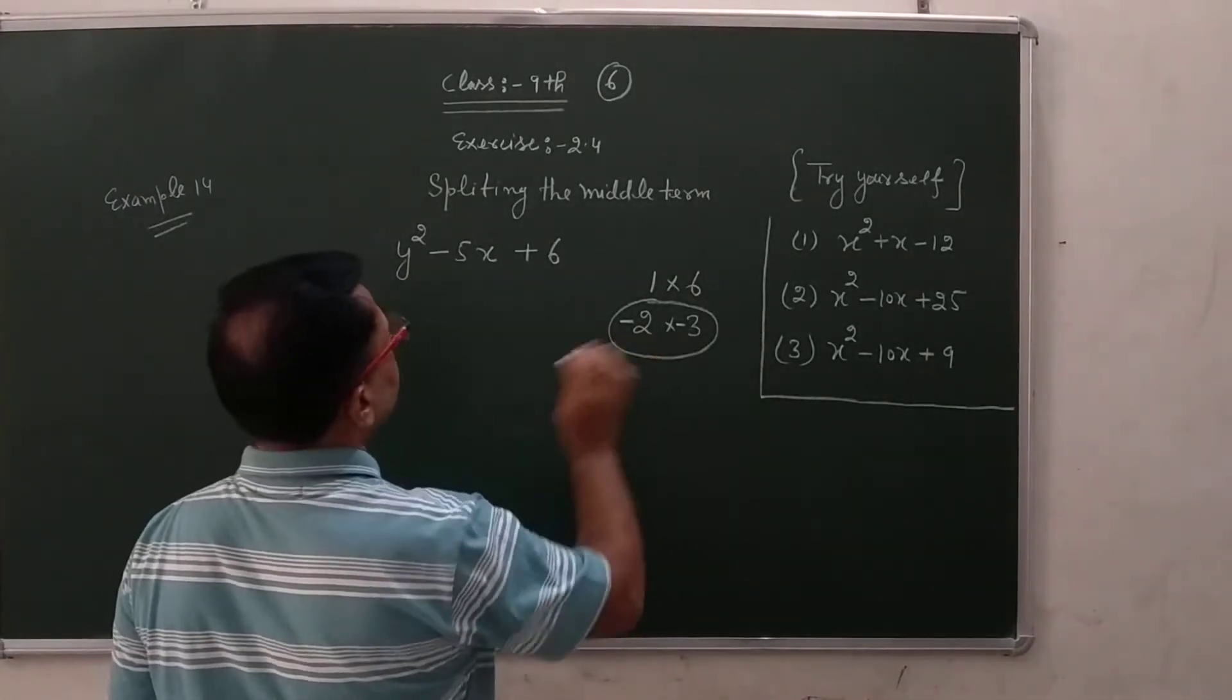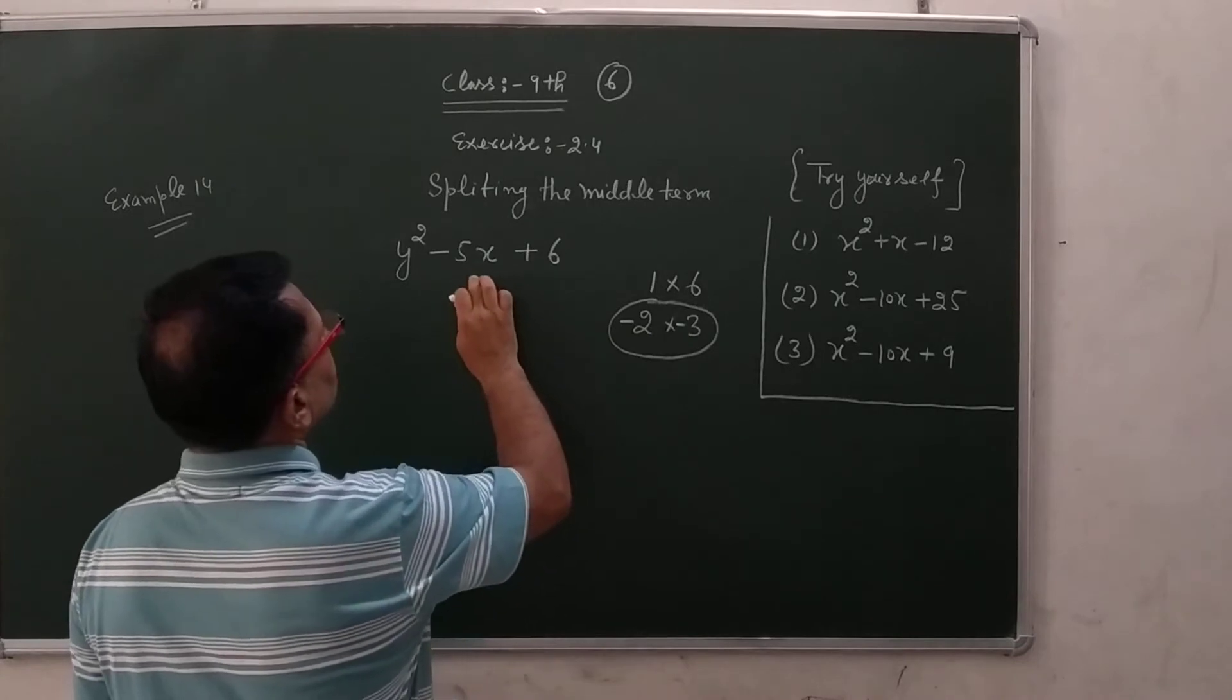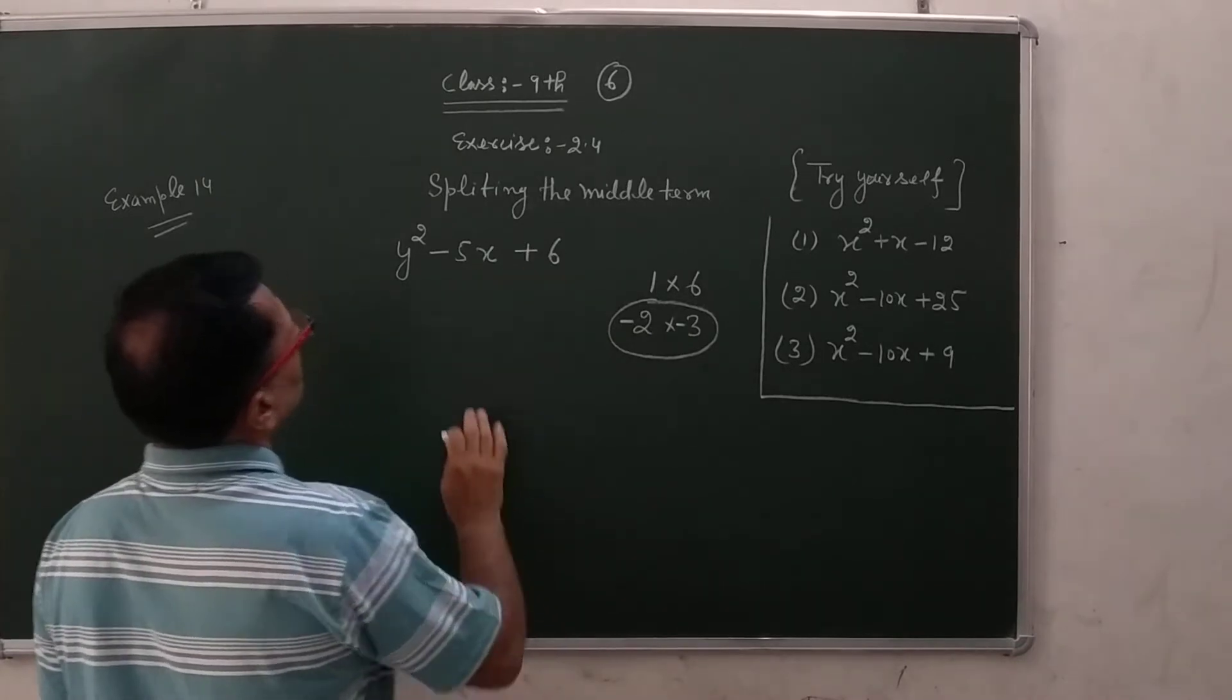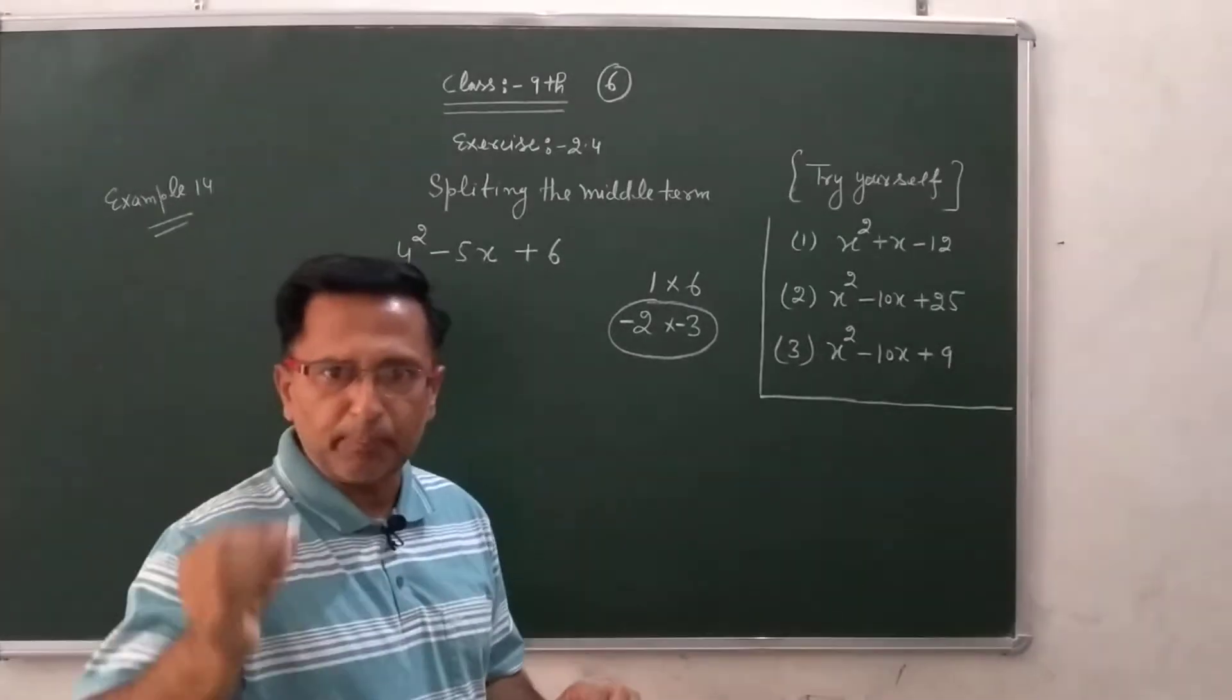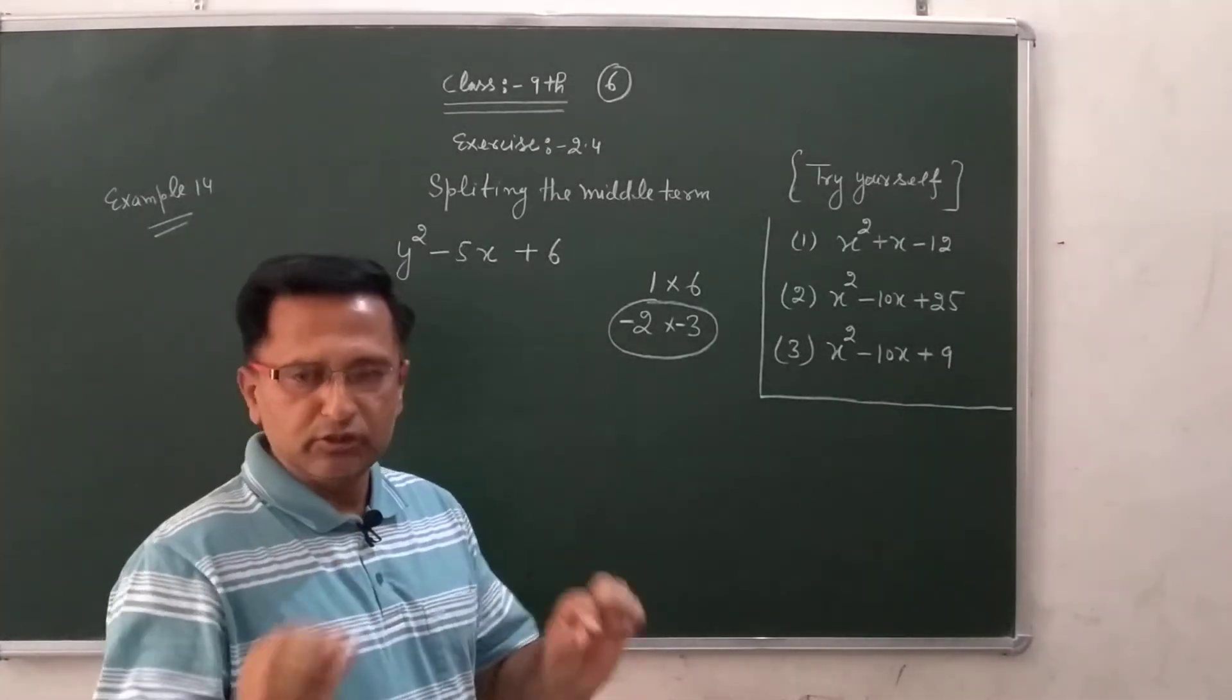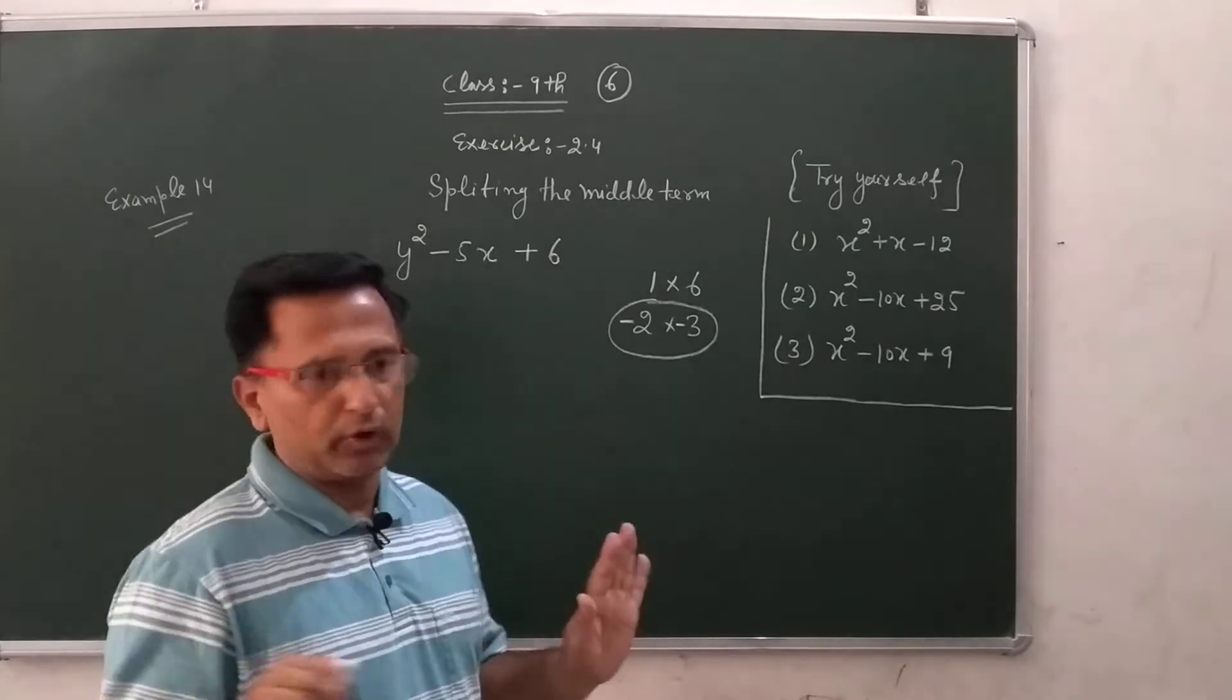So beta these are the two digits who cover the splitting the middle term. To aapne in savalon mein, maine baar baar kaha hai ki aapne symbol ka bhoot dhyan dena hai. Jiska symbol galat hoge, sum wrong ho gaya.